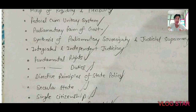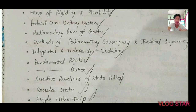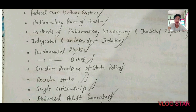Another feature is the mixture of federalism and unitary system. Federal features include constitutional supremacy, division of power, and independent judiciary. But it also has unitary features such as the integrated civil services, and Article 356 — the Governor's Rule — which are the emergency provisions and are unitary in nature. The Indian government follows a parliamentary form of government.